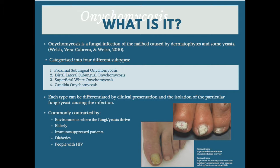Onychomycosis is commonly contracted in environments where fungi and yeast thrive, such as in damp and warm environments, for example public showers. It is prevalent in those of an elderly generation and is commonly seen in individuals with diabetes, HIV or the immunosuppressed.